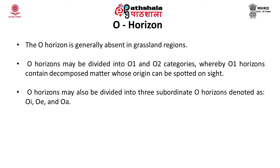The O-horizon may be divided into O-1 and O-2 categories, whereby O-1 horizons contain decomposed matter whose origin can be spotted on site, and O-2 horizons contain only well-decomposed organic matter whose origin is not readily visible. The O-horizon may also be divided into three subordinate horizons denoted as O-I, O-E and O-A.